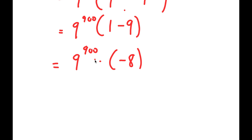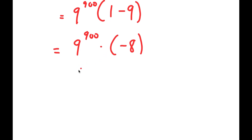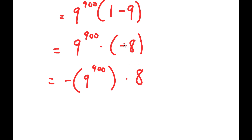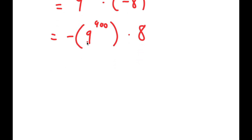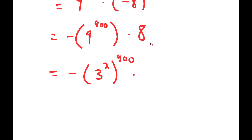So I get nine to the power of nine hundred times negative eight. I can rewrite this as negative nine to the power of nine hundred times eight — all I did was move the negative sign to the front. Now, nine I'm going to rewrite as three squared, and eight I'm going to rewrite as two to the power of three.